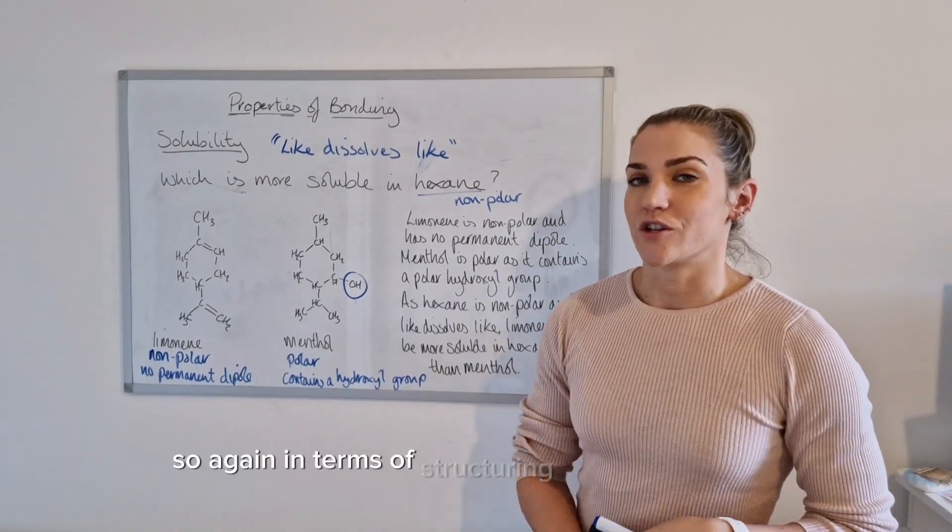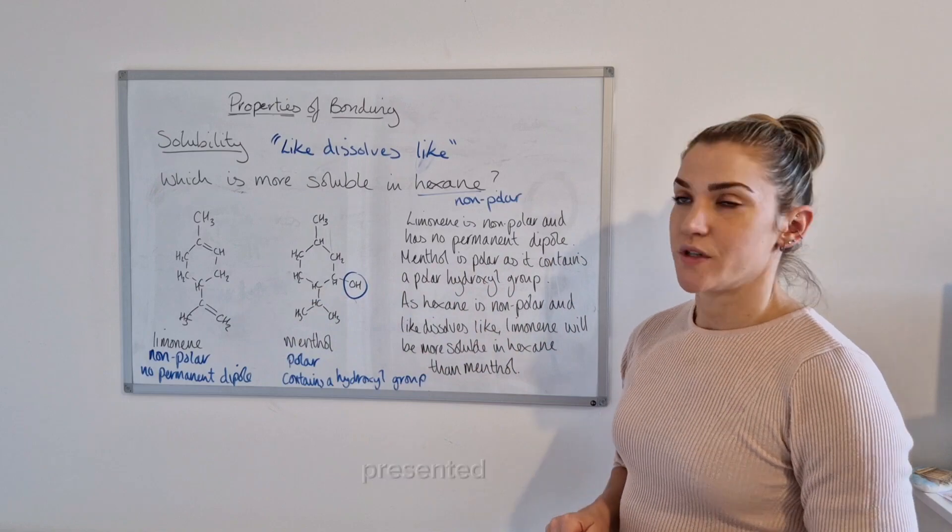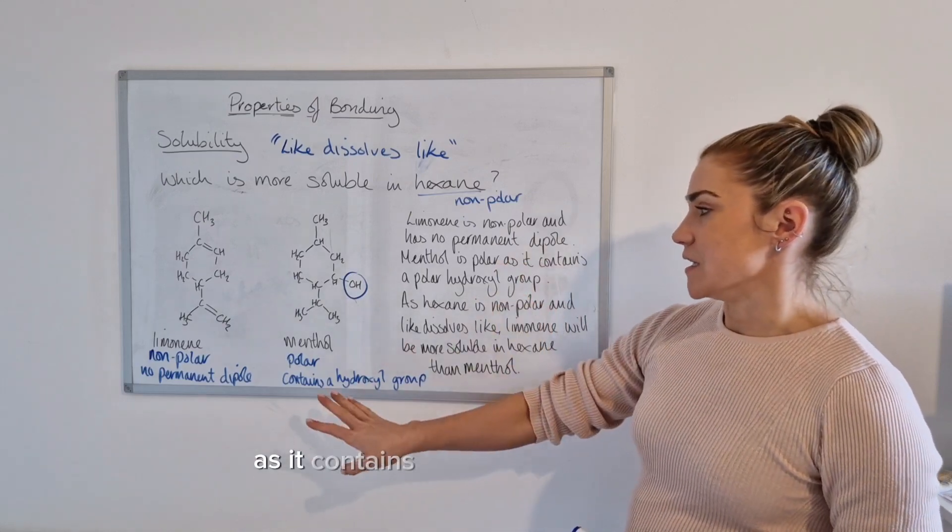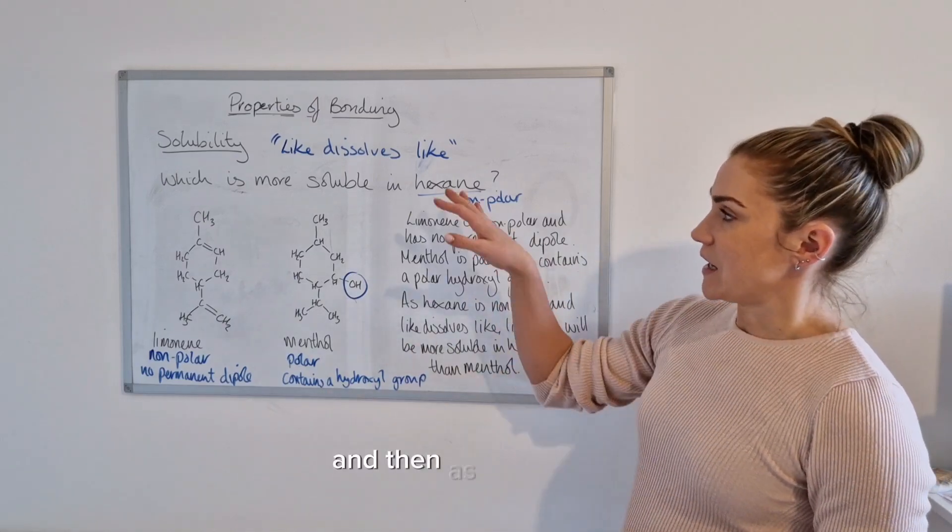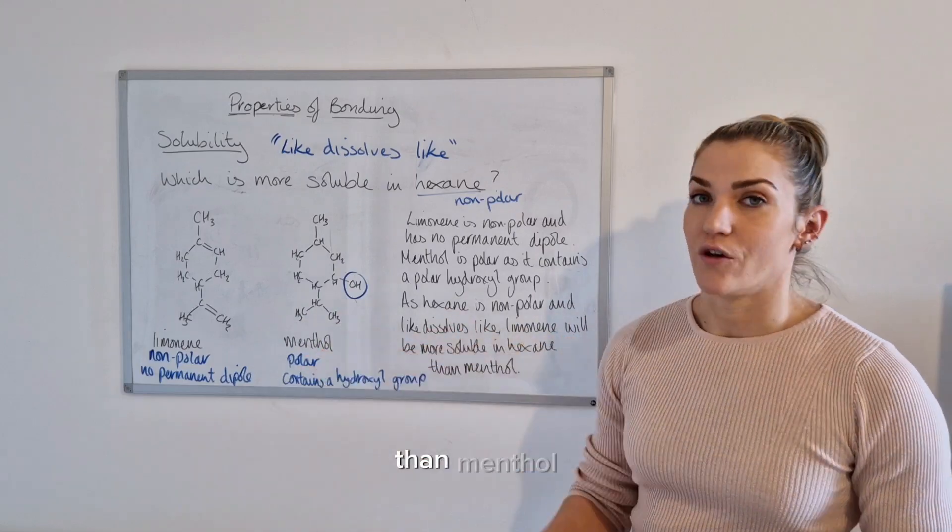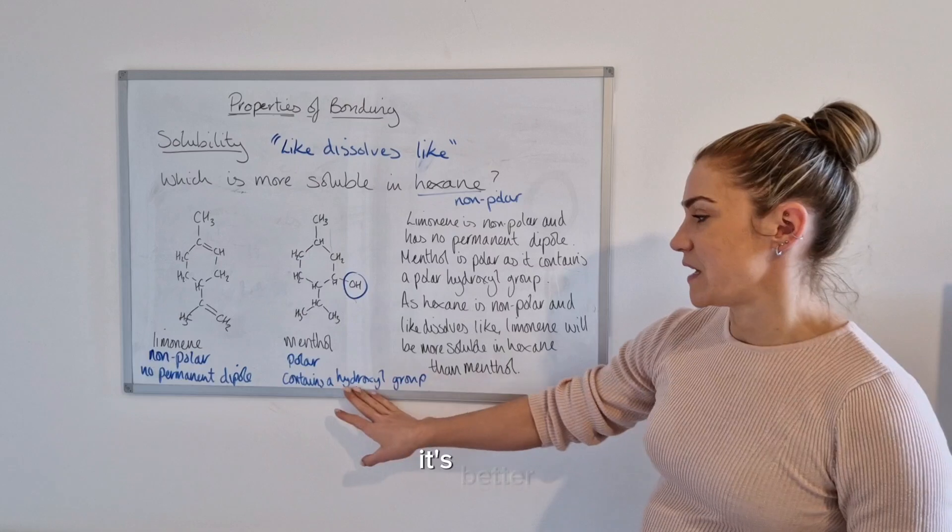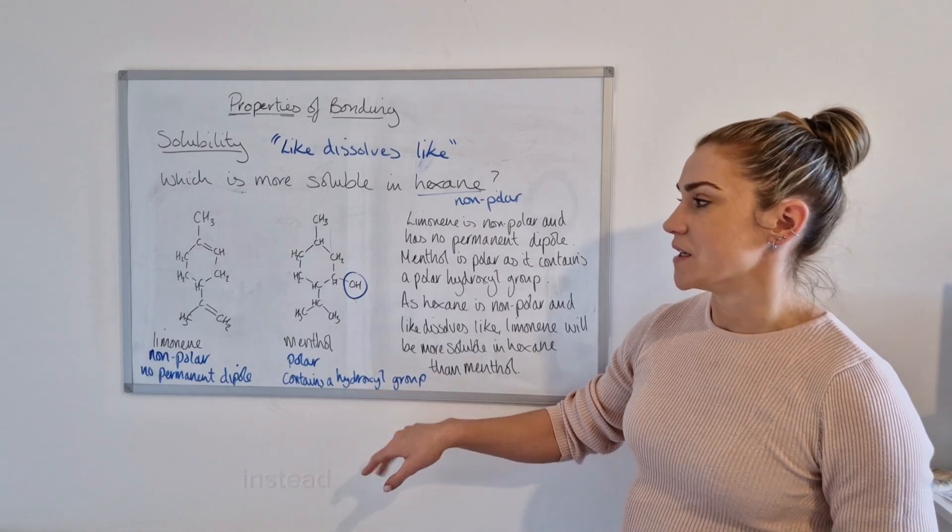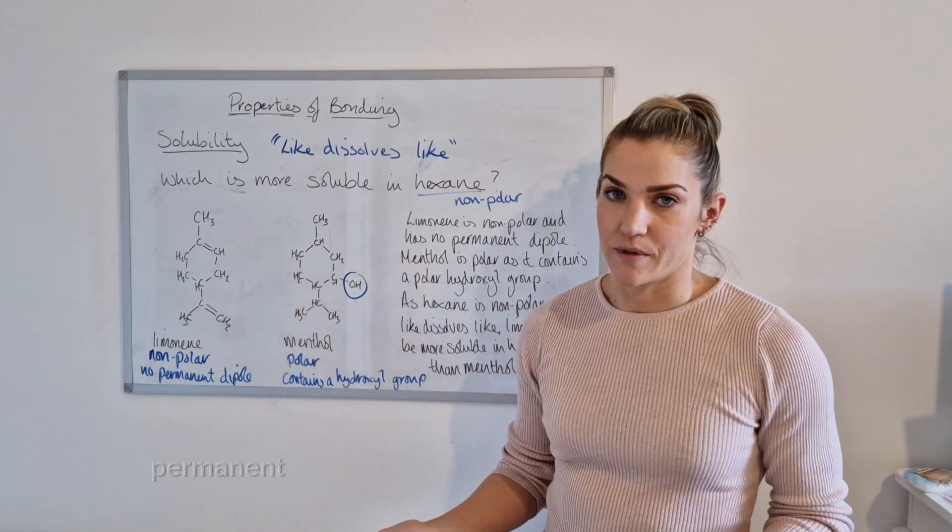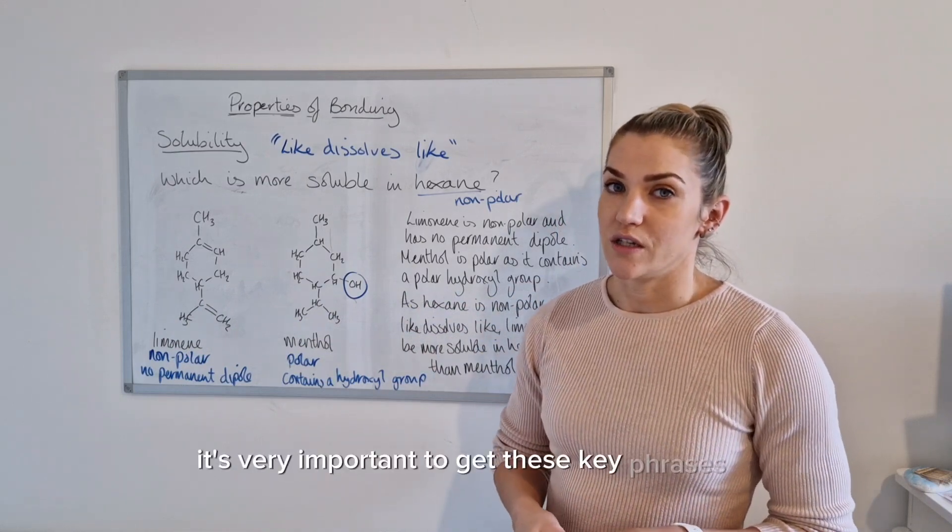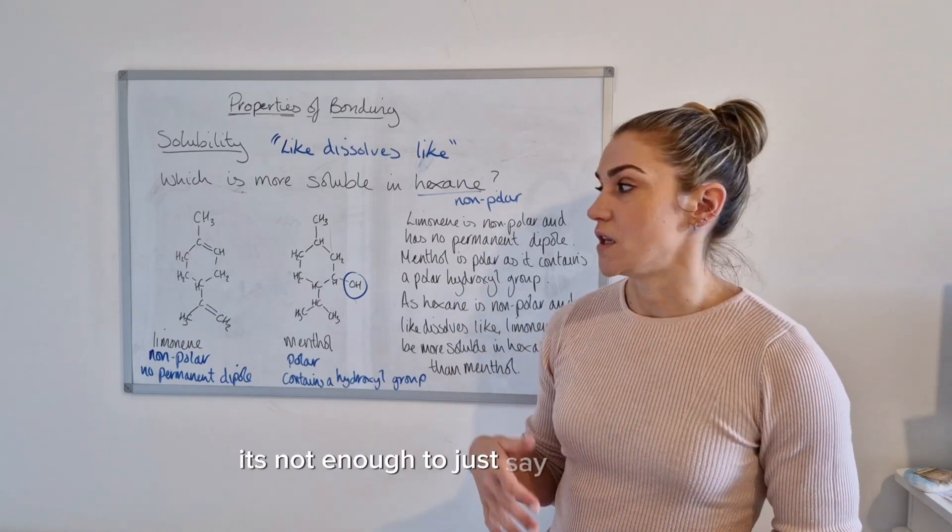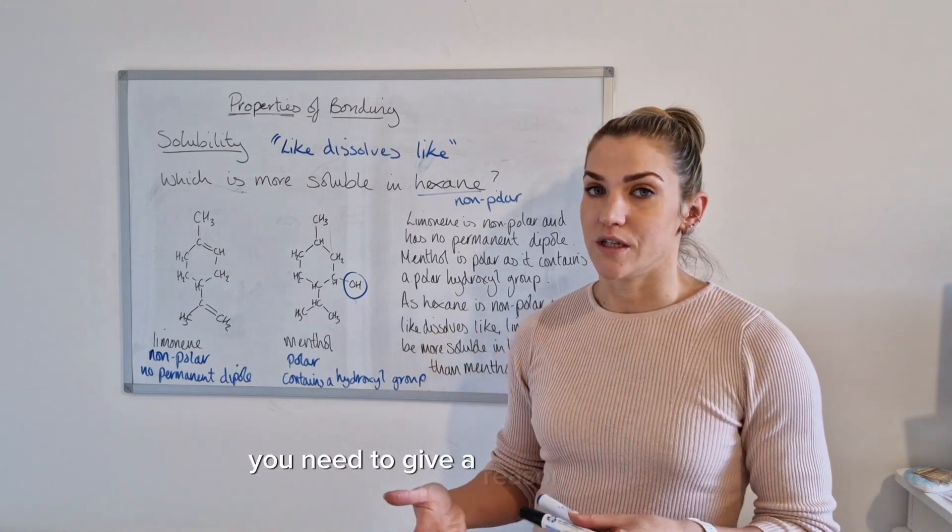So again, in terms of structuring an answer for this, you state what each of the molecules are presented with are. So limonene is non-polar and has no permanent dipole. Menthol is polar as it contains a polar hydroxyl group, and then as our solvent hexane is non-polar and like dissolves like, the limonene will be more soluble in hexane than menthol. If the molecule contains a hydroxyl group, it's better to state that it's got a polar hydroxyl group instead of talking about whether it has a permanent dipole or not. If there's no hydroxyl groups or anything, then just state whether it has a permanent dipole or it doesn't have a permanent dipole. But it's very important to get these key phrases in because the SQA need to know how you know that the molecule is polar or non-polar.